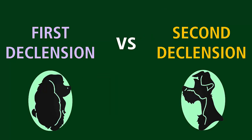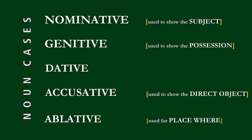First of all, the cases are all still the same. Remember the five noun cases: Nominative, which is used for the subject; Genitive, which is used for possession; Dative; Accusative, which is used for direct objects; and Ablative, which we have learned how to use to communicate place where.